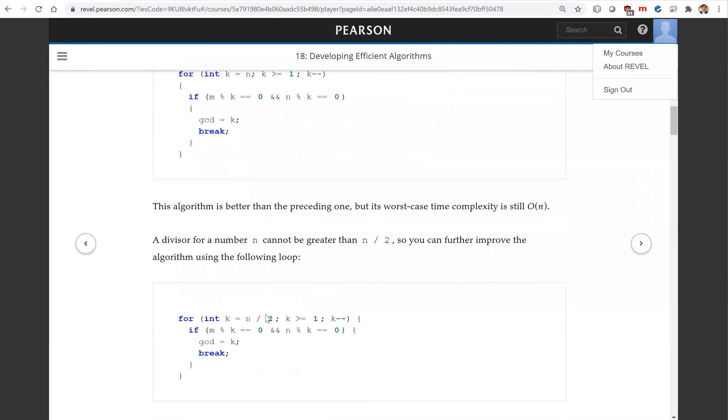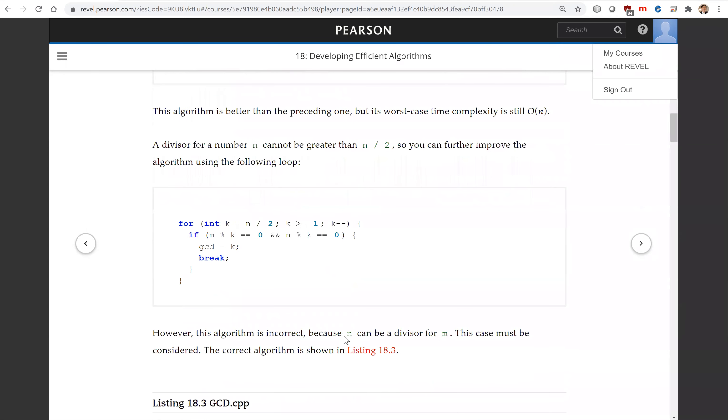Another thing is you don't have to go all the way starting from N. You can start from half of N. That's also a small improvement, but all of this will not change the eventual order of magnitude. It's still O(N) time complexity.